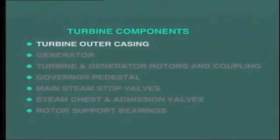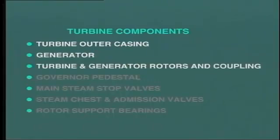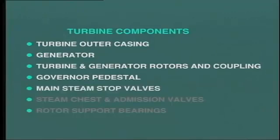Other components noticeable here are the governor pedestal, which supports the front end bearing and the governor system. Steam from the stop valve is fed into steam chests located on either side of the turbine. The turbine admission valves are located in each steam chest to control the flow of steam into the turbine. The turbine rotor is directly coupled to the generator rotor to transfer mechanical energy produced in the turbine to the generator, where it is converted into electrical energy. Make sure that you know where the following components are located on your particular turbines: the turbine outer casing, the generator, the turbine rotor, the generator rotor, the coupling, the governor pedestal, the main steam stop valves, the steam chest and associated admission or control valves, and the location of bearings which support the turbine rotor.